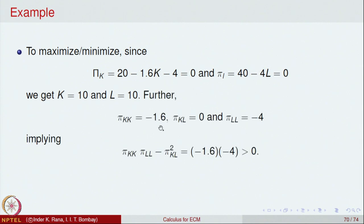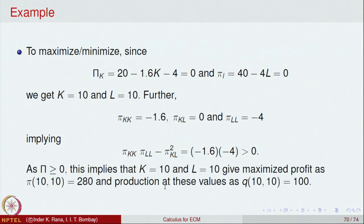To confirm this is indeed a maximum, we apply the second derivative test. The second partial derivative of π with respect to K is −1.6, and with respect to L is −4. There is no L in the first expression, so the mixed partial derivative is 0. The discriminant π_KK · π_LL − π²_KL is positive and the second derivative is negative, confirming an absolute maximum at K = 10, L = 10. The maximum profit is π(10, 10) = 280, with 100 units of product to be produced.